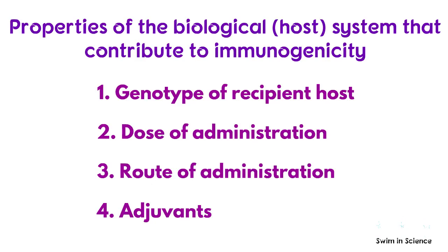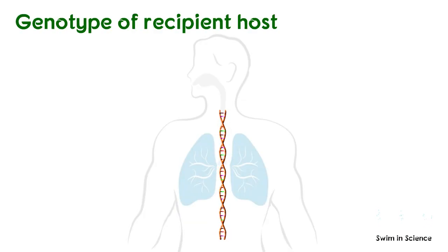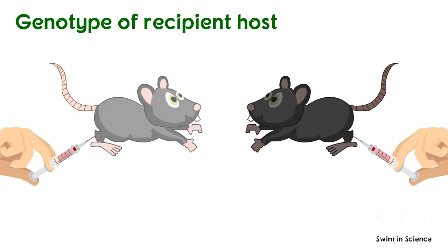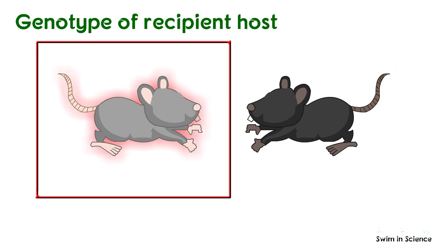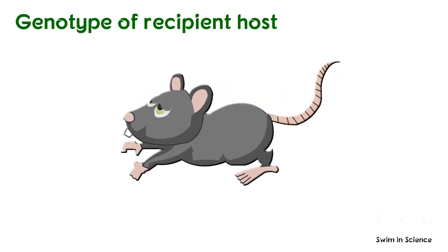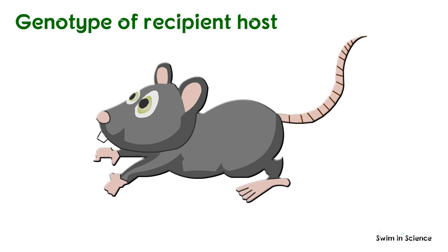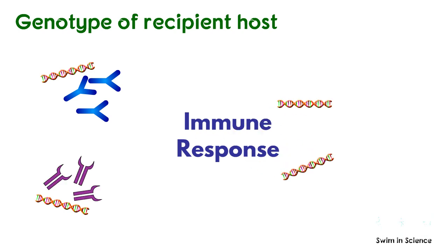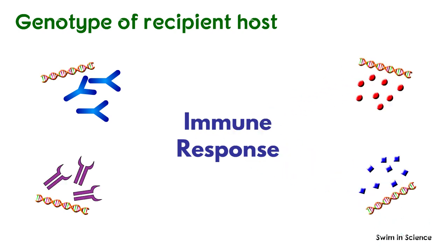Even if an antigen has properties that contribute to immunogenicity, its ability to induce an immune response will depend on certain properties of the biological system, or host, that the antigen encounters. The genotype, or genetic constitution of an immunized host influences the type and degree of the immune response. For example, in a study, two different strains of mice were immunized with a synthetic immunogen. One strain produced a high immune response, while another produced a low immune response. When they were crossed, the F1 generation showed an intermediate immune response. The immune response is influenced and controlled by genes that encode B-cell and T-cell receptors, and by genes that encode various proteins involved in immune regulatory mechanisms.